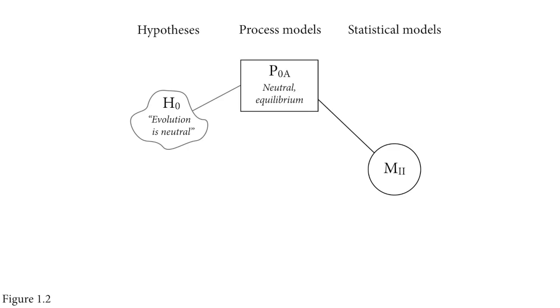On the left we have hypotheses. The hypothesis shown is that evolution is neutral. Hypotheses like this are quite vague. To do any work with them, you have to map them to some kind of process model. That's a real scientific model that has logical causation in it, with entities that affect other entities.